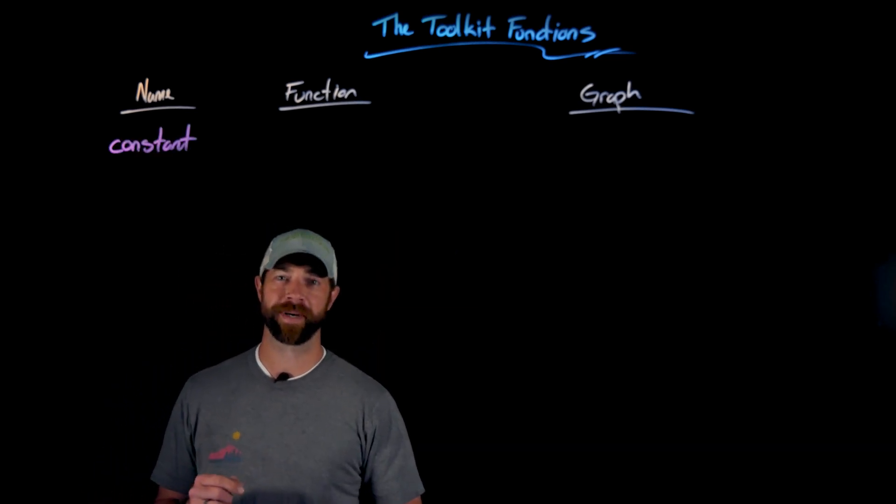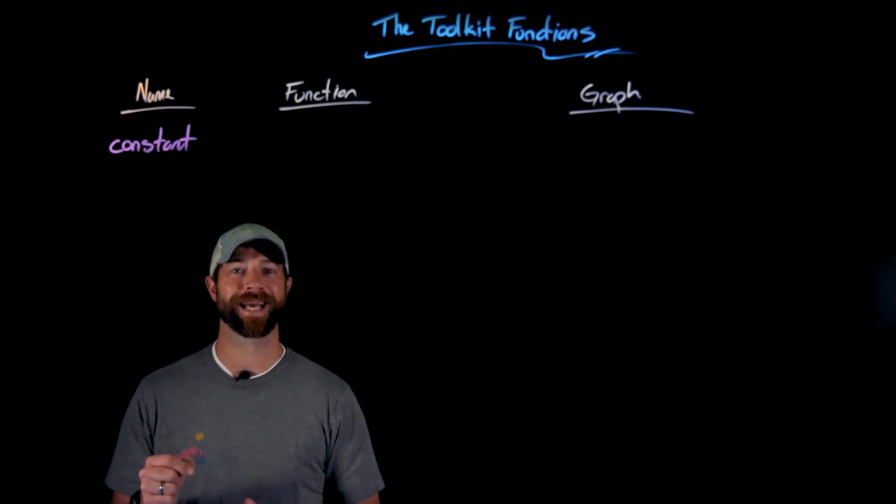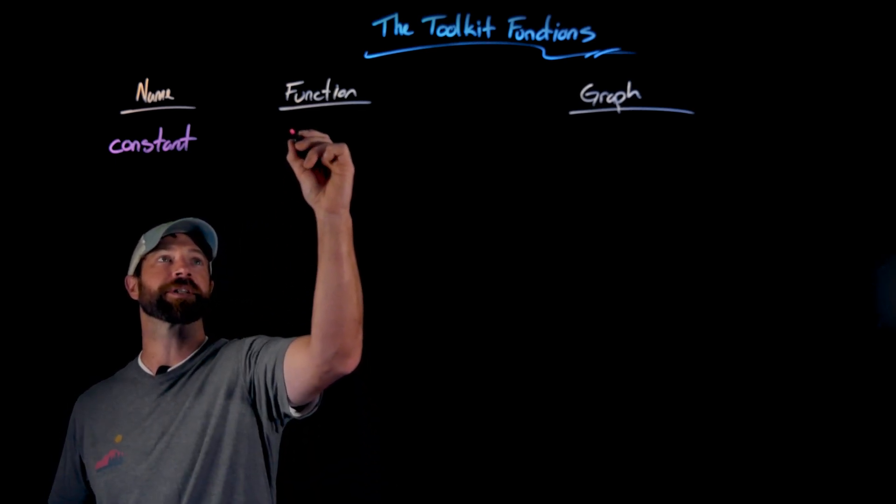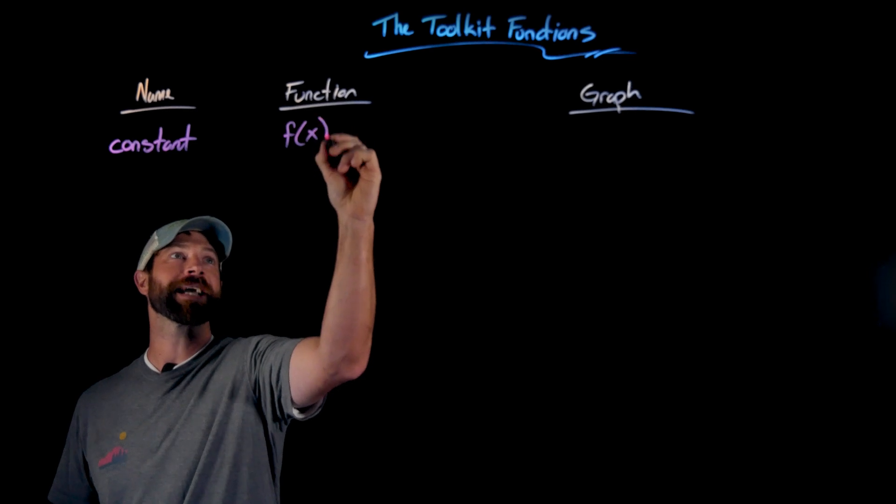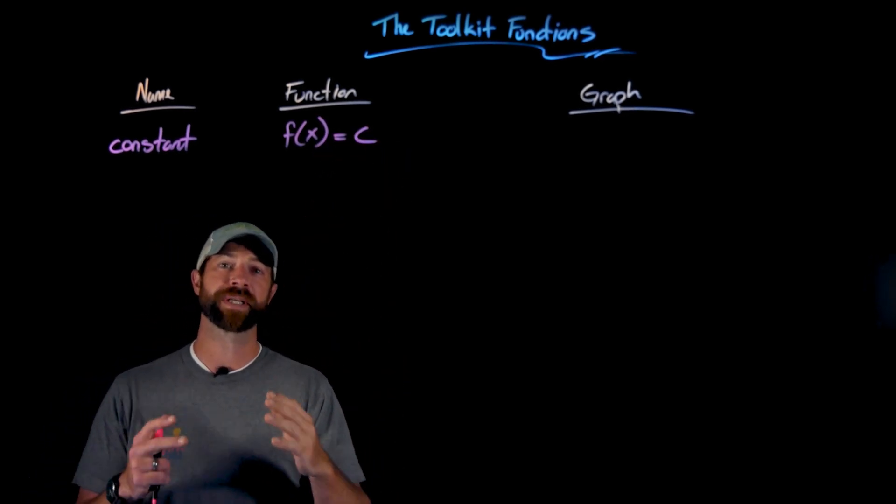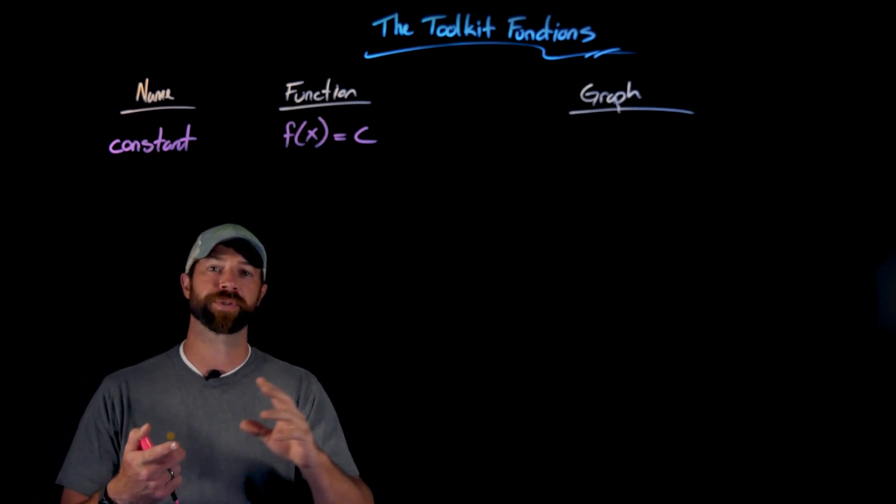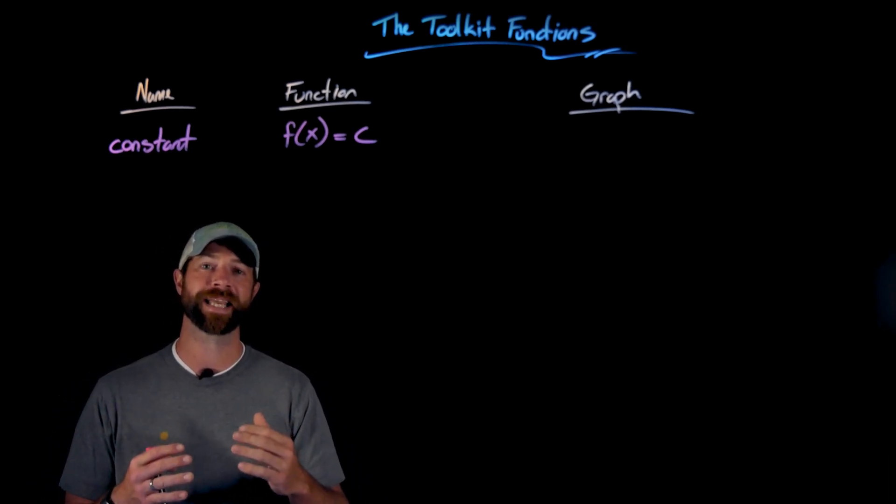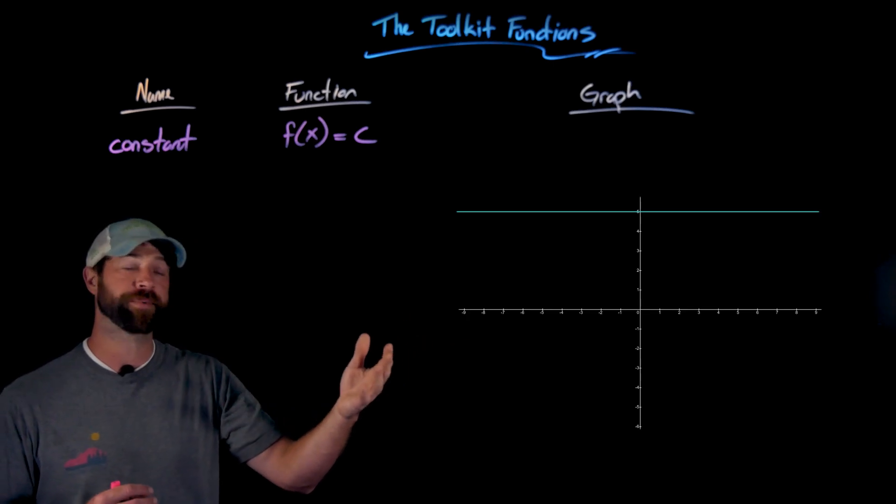The first function we're going to talk about is the most basic and really not that interesting—it's called the constant function. It's a function that's defined as all outputs as some value, where c is a constant. So an example would be f(x) equals 5 or f(x) equals negative 3. Here are two examples right here.